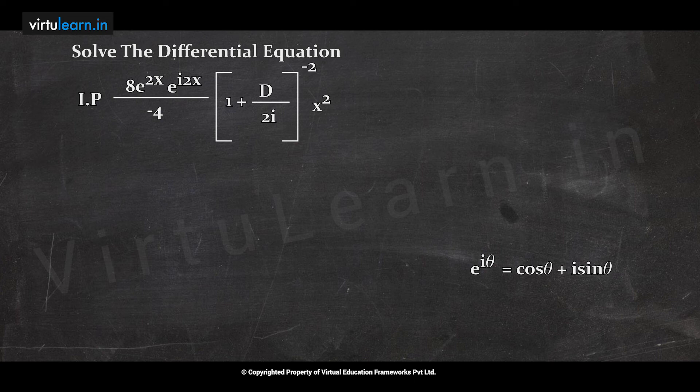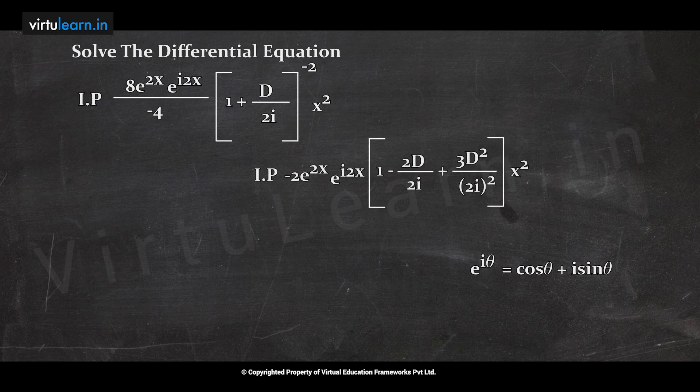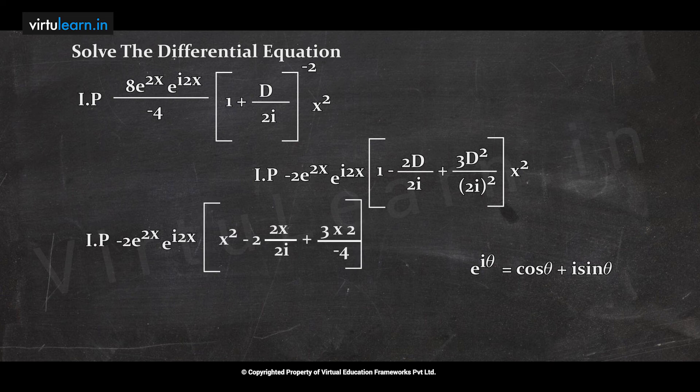Expanding (1 + D/2i)^(-2) up to the x² term: 1 - 2D/2i + 3D²/(2i)² = 1 - 2D/2i + 3D²/(-4). Multiplying through by x²: x² term gives x², the D term gives -2(2x)/2i, and the D² term gives 3·2/(-4).